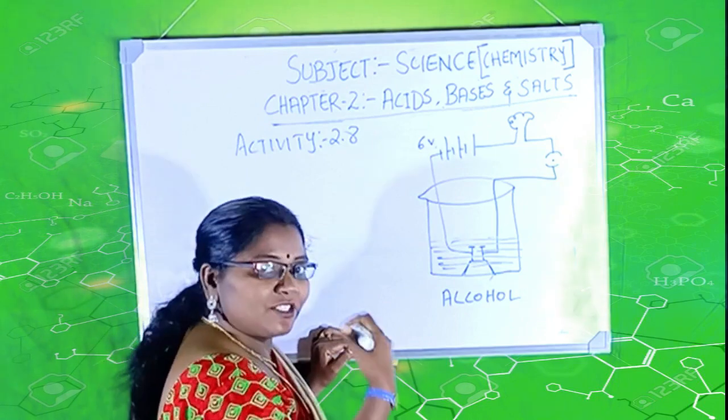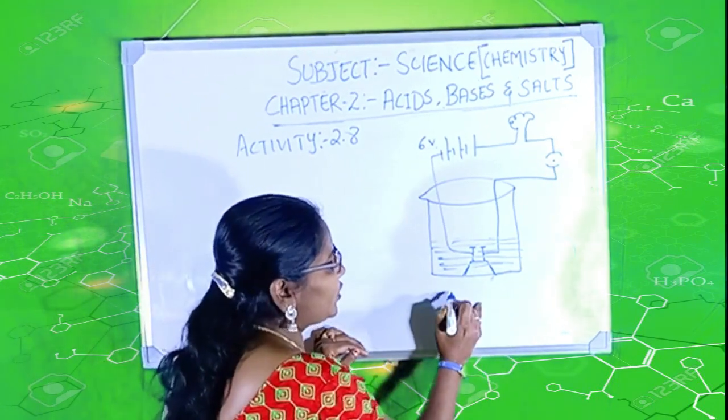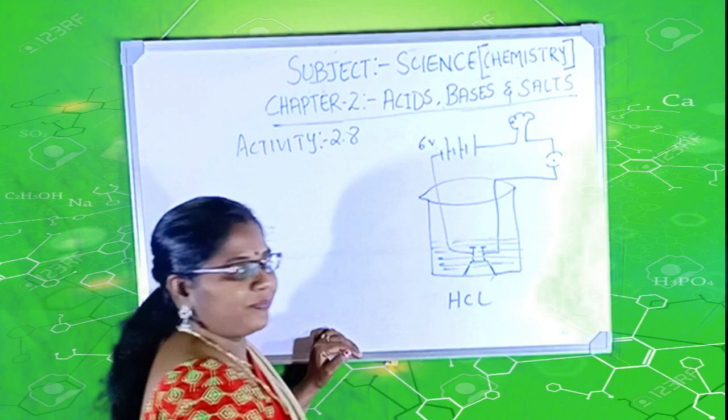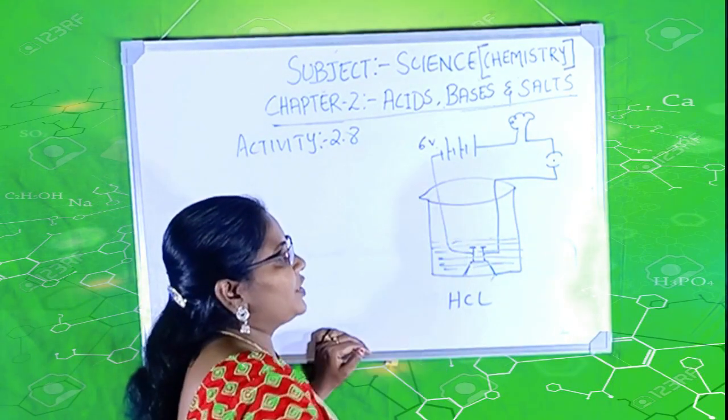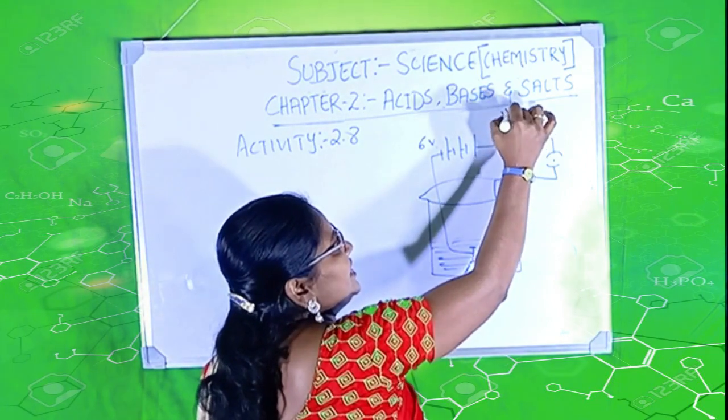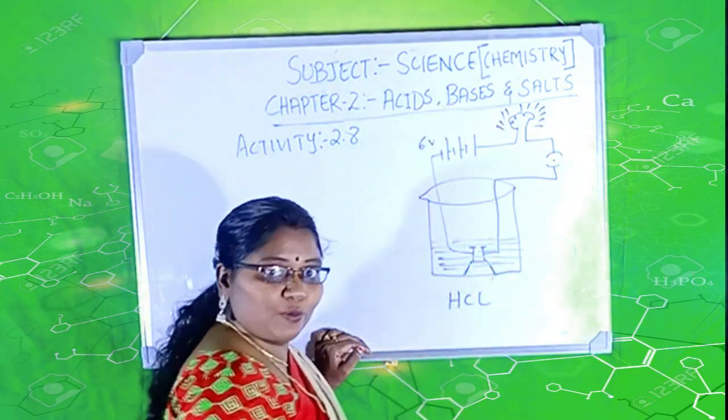Now, next is, check out with the hydrochloric acid, that is HCl. Now, fill this beaker with the solution of hydrochloric acid and switch on. Once you switch on, you can see that the bulb glows, right?